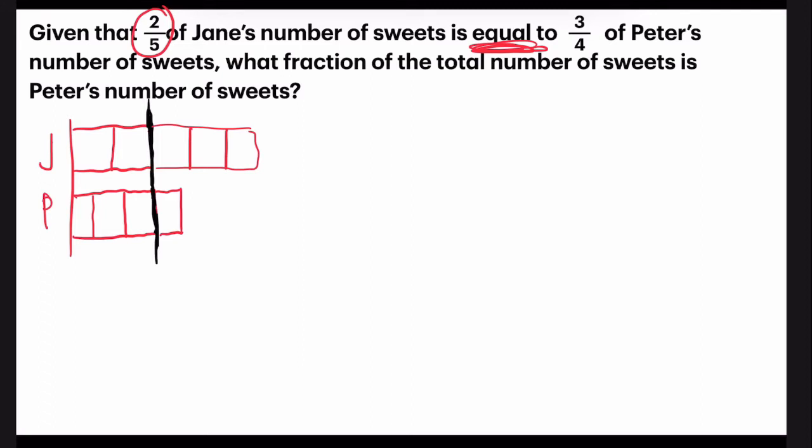Do you observe anything in the model? So, you see that this part that I've highlighted in green, they are of the same portion. But every single piece is not cut up equally. So it's very hard to compare. So what do you think I should do now?